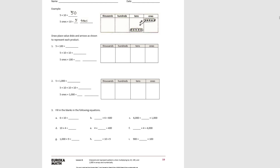So we have five times a hundred. We show our five ones, and since we're multiplying by a hundred, they go times ten, and times ten again. We end up with five hundreds, so five times one hundred is five hundred. Five times ten times ten — multiplied by ten twice — is five hundred. Five ones times one hundred equals five hundreds.